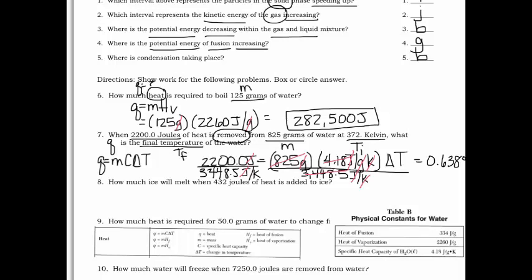We were given an initial temperature of 372 Kelvin. We need to determine whether to add or subtract 0.638. Since heat was removed, the final temperature will be lower. So we take 372 and subtract 0.638, giving us a final temperature of approximately 371.4 Kelvin. Box that in.